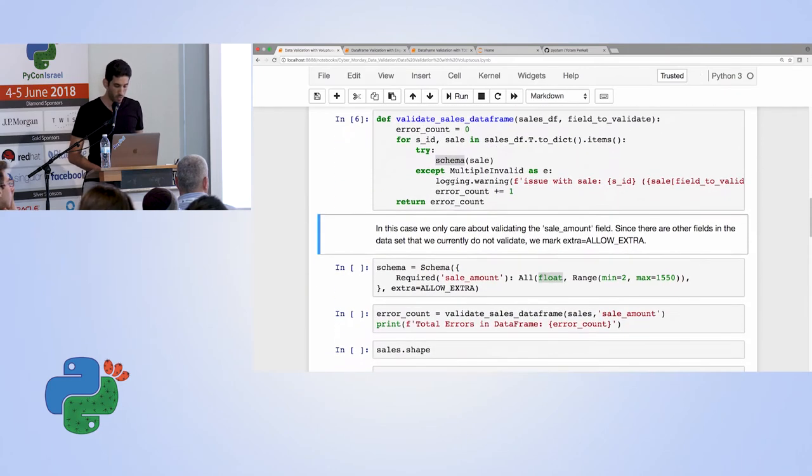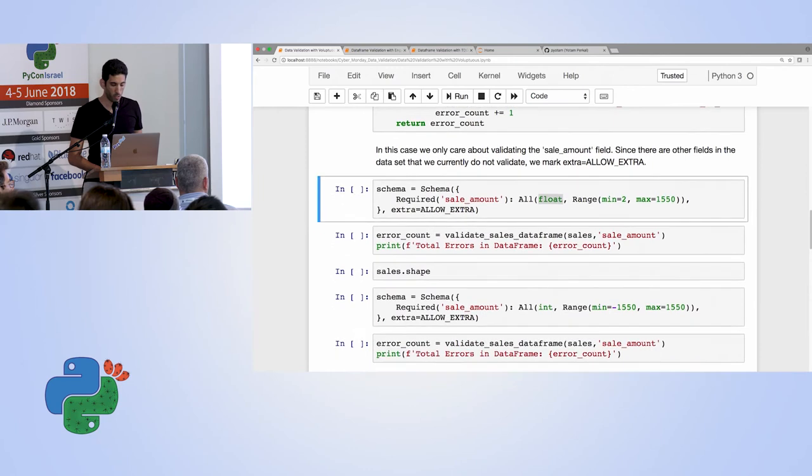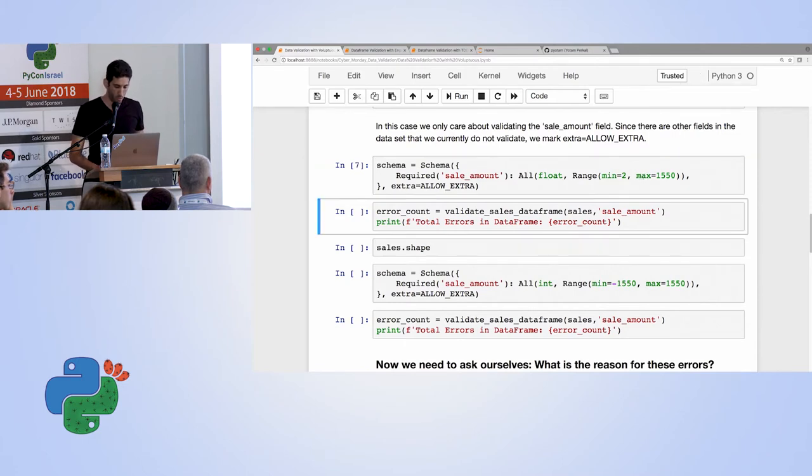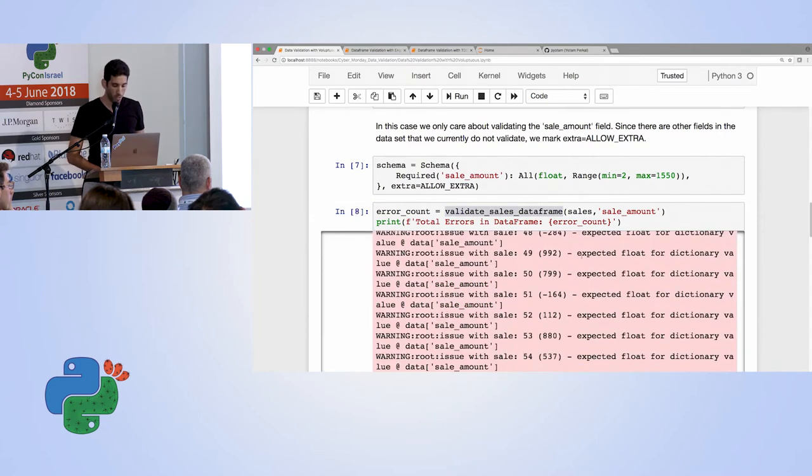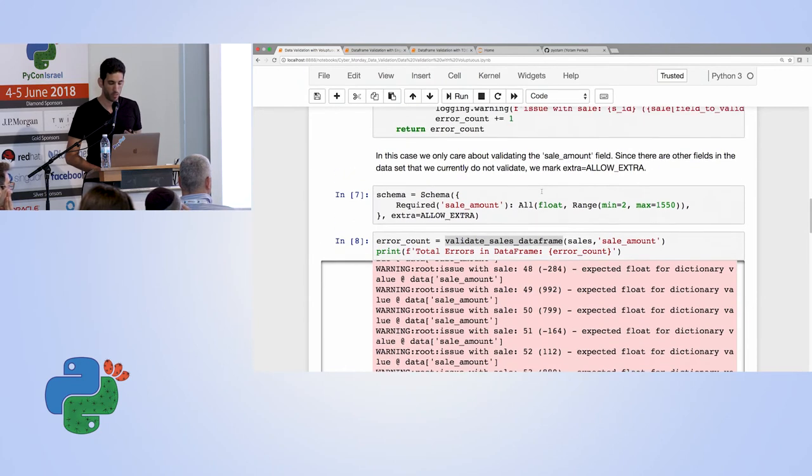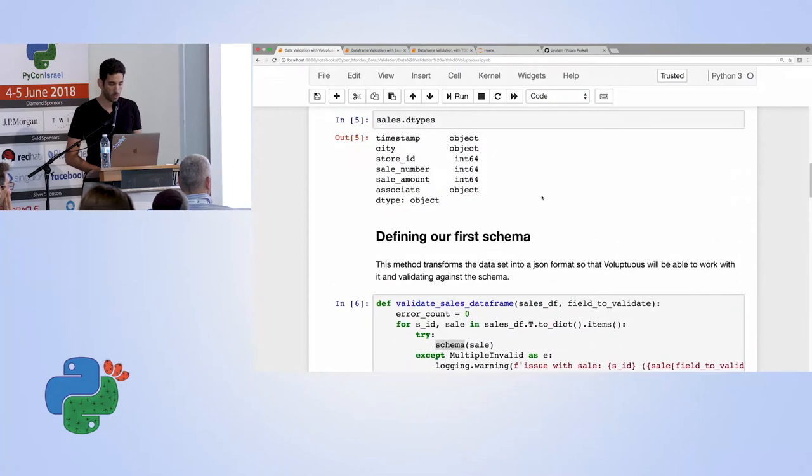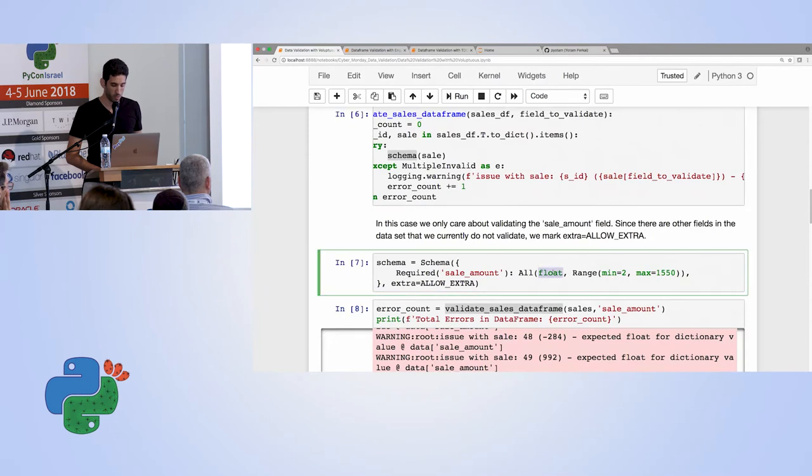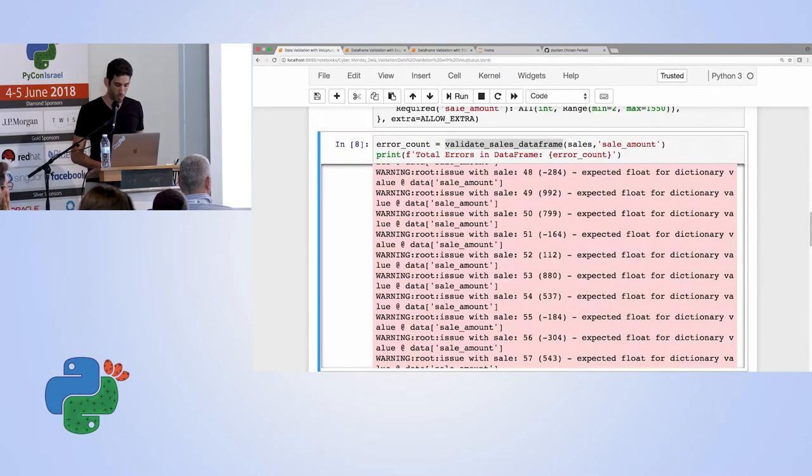And now this is where we start to drill down into the capabilities of Voluptuous. I've created a simple function that takes in a data frame which field we want to validate. And basically, in order for Voluptuous to be able to process it, we have to transform it into a JSON format. And then just run a schema on it. And our schema is defined here. Currently, we are only looking at a specific field, which is the sale amount. And we want to make sure that our data type is float and the range is between 2 and 1550. So we simply run our function, our validation function. And we see that we get warnings which state that expected the float value, but that wasn't the case. So if you remember, we saw that the data types for the sale is actually int. So that's a mistake. Let's quickly fix that.